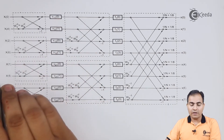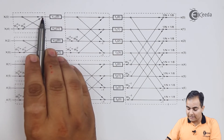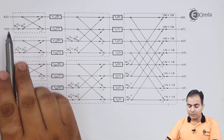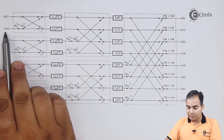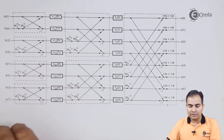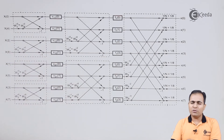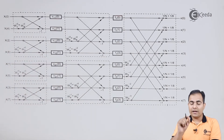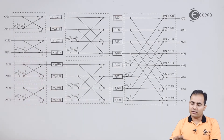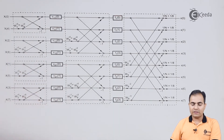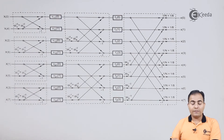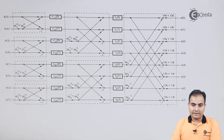To calculate v1[0], it is the addition of x[0] and x[4]. X[4] is multiplied by omega 2 to the minus 0, which has value 1, so 1 times x[4] is always x[4]. Similarly, 1 times x[6] is always x[6]. All these values will remain as they are.